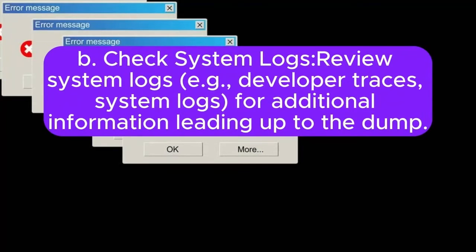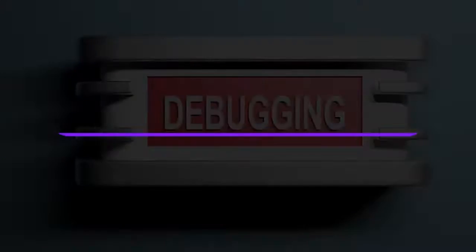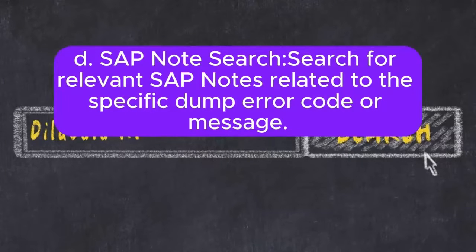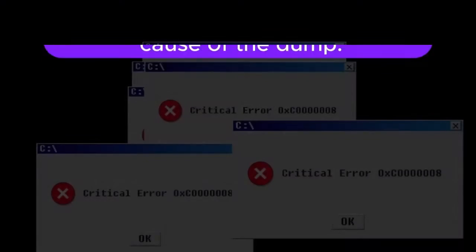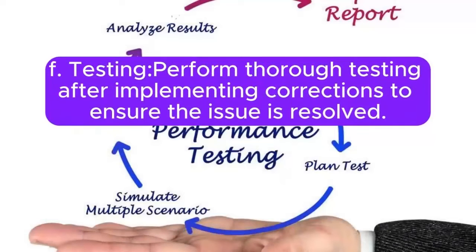B. Check system logs: review system logs, developer traces, and system logs for additional information leading up to the dump. C. Debugging: if necessary, use transaction ST22 to activate debugging to analyze the dump in real time. D. SAP note search: search for relevant SAP notes related to the specific dump error code or message. E. Code review: analyze the affected ABAP code and make necessary corrections to fix the root cause of the dump. F. Testing: perform thorough testing after implementing corrections to ensure the issue is resolved.